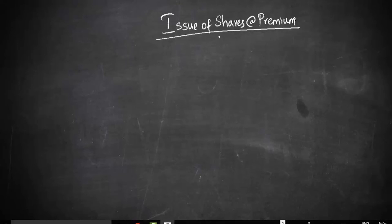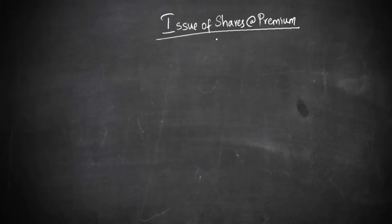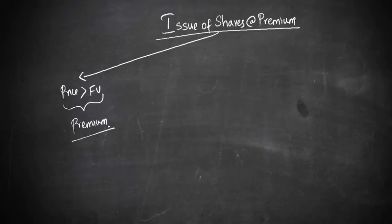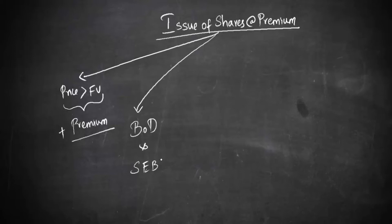Let us understand what is issue of shares at premium. We know that shares can be issued at a price higher than the face value, but when it comes to issuing shares at discount, there are certain restrictions. The difference between the issue price and the face value is called premium. Companies which command very good reputation in the market can issue shares at a price higher than the face value by adding a premium. This premium is decided by the board of directors, and if it is a listed company, the guidelines of SEBI have to be followed.